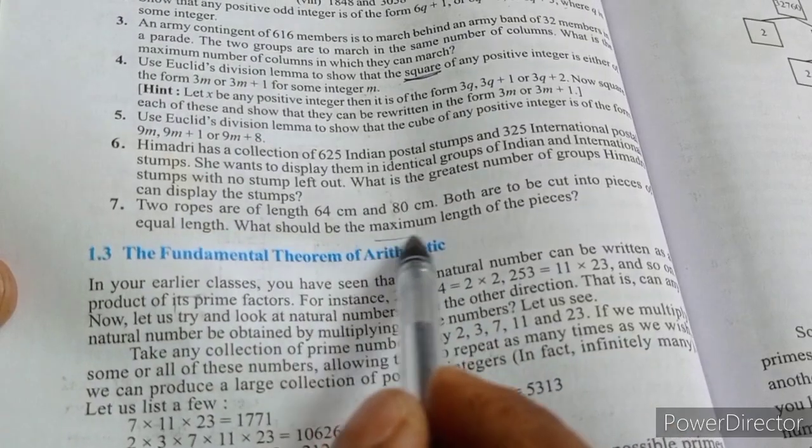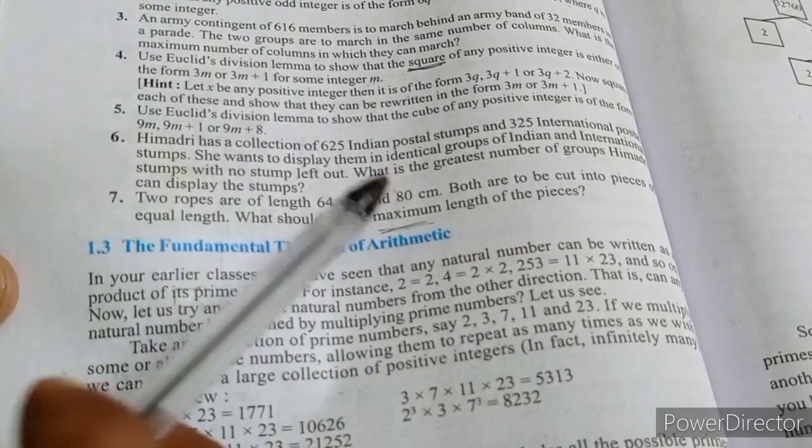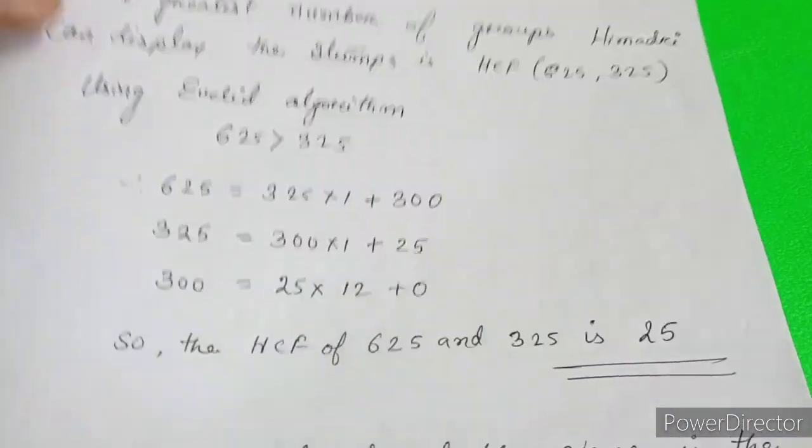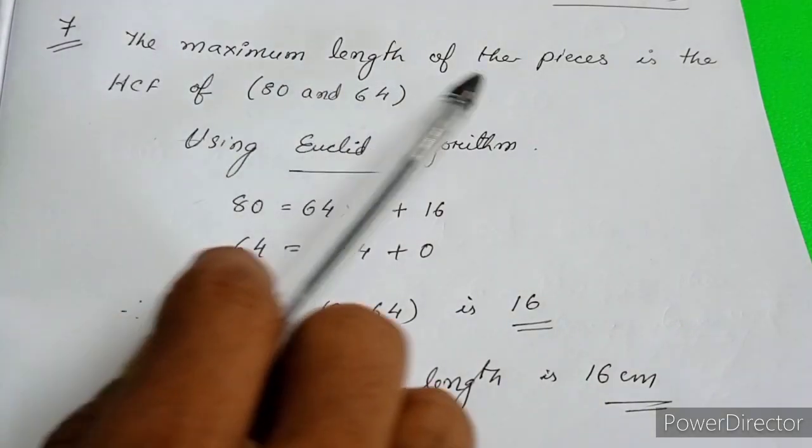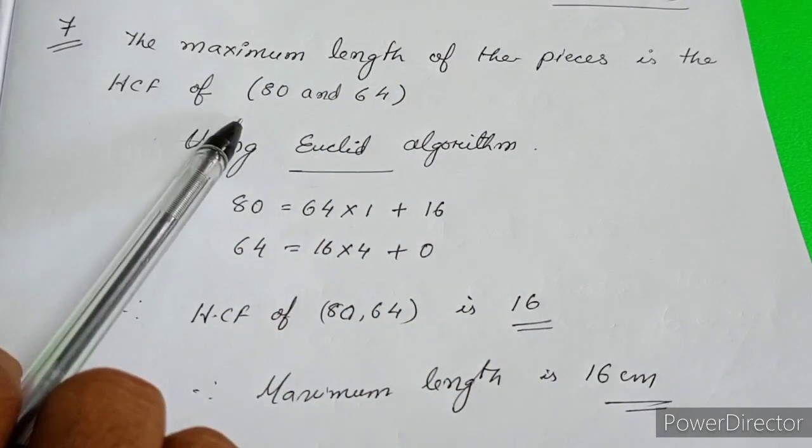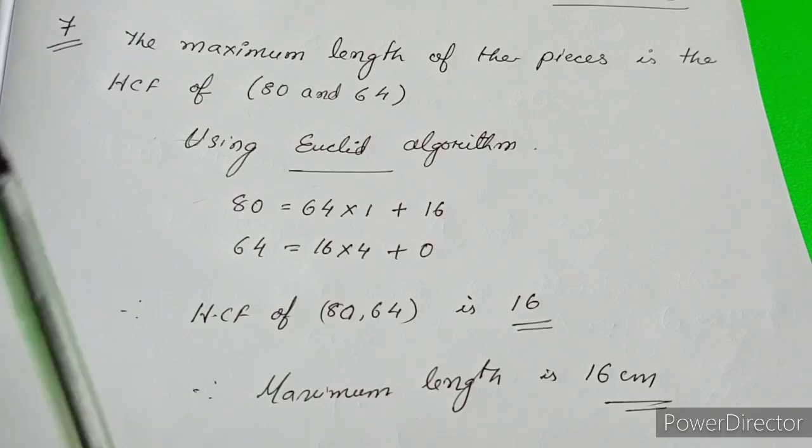Again, concentrate on the word maximum. The maximum length is nothing but the HCF of 80 and 64. Basically here we are talking about Question Number 7. The maximum length of the pieces is the HCF of 80 and 64. Since we are talking about Euclid's algorithm, we will use it.